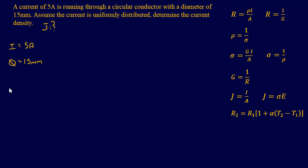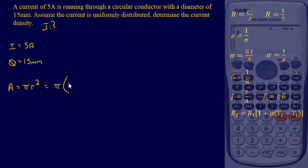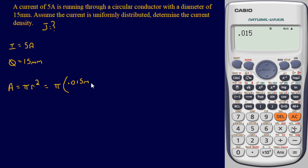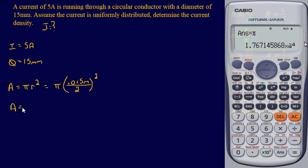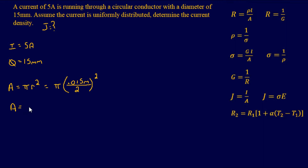Area equals π times radius squared. This is 15 millimeters, so we convert to meters: 0.015 meters. Dividing by 2 for the radius and squaring, then plugging into our calculator gives an area of 1.77×10⁻⁴ meters squared.